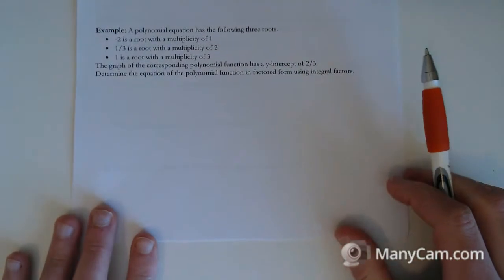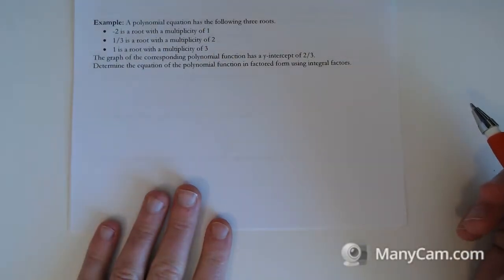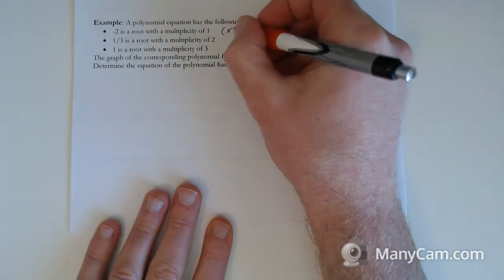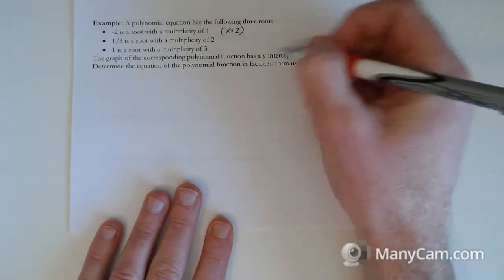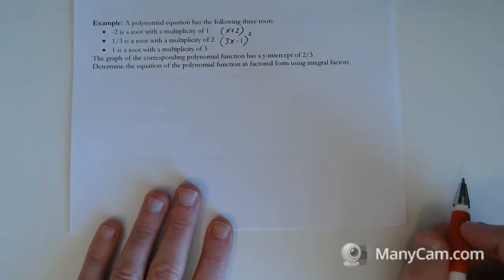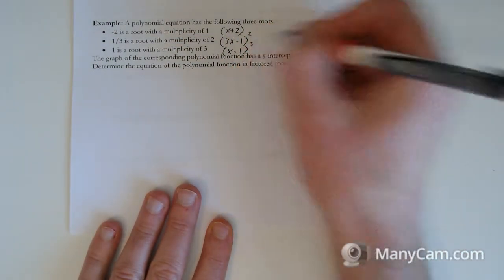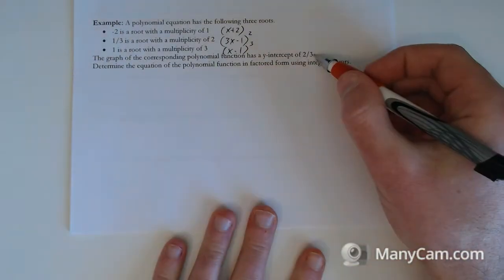Last question. This is a short video. Maybe pause this one. Try it on your own first. I don't think it's going to be too difficult, though. The polynomial equation has the following three roots. Minus 2, multiplicity of 1. So it's going to be an x plus 2 there. 1 third, multiplicity of 2. So 3 comes up. The 1 gets subtracted. 3x minus 1. Twice. And 1 is a root with multiplicity of 3. So x minus 1 cubed, we get from that one.